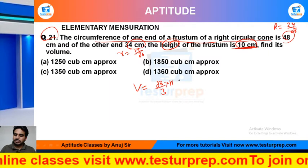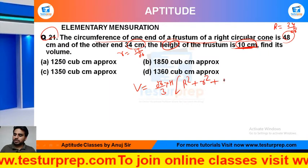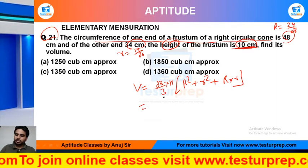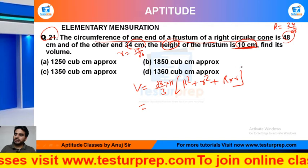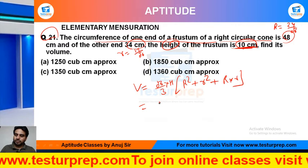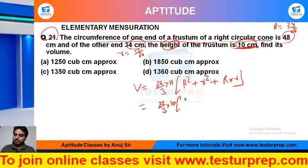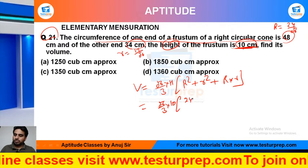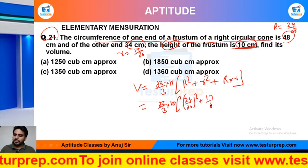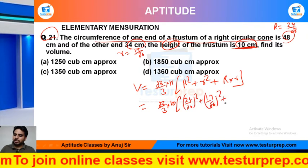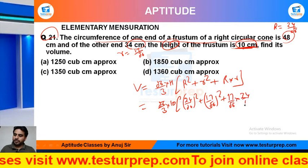We know that the volume of frustum will be equal to pi divided by 3, multiplied by h, and lower r square plus r into r. So r throughout common hogi, that means r square common hoga. You know that pi divided by 3 multiplied by 10, this would be 24 square divided by pi whole square, 17 divided by pi whole square, and 17 divided by pi into 24 divided by pi.